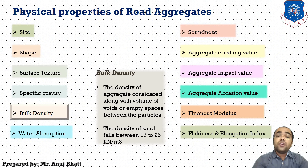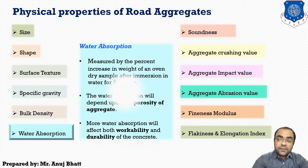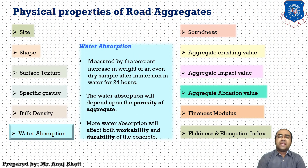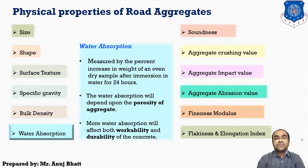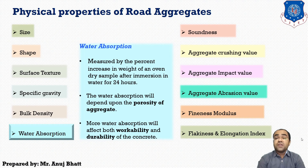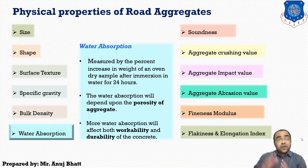If we talk about the water absorption property, the water absorption of concrete aggregate is measured by the percentage increase in the weight of an oven dry sample after immersing that sample into water for 24 hours. But this does not give the true picture, and many times the absorption for a period equivalent to the final setting time of cement is measured, giving a more realistic result. Water absorption will decrease the water content in the concrete, and the concrete will require a higher water-cement ratio. Water absorption depends upon the porosity of aggregates, and more water absorption will affect both the workability and durability of the concrete.